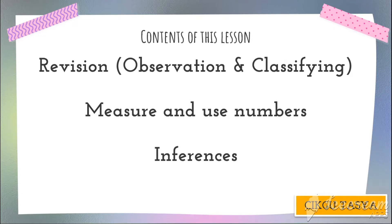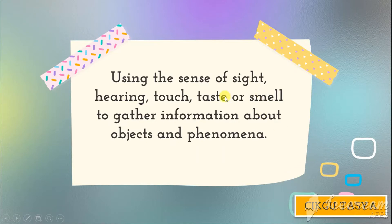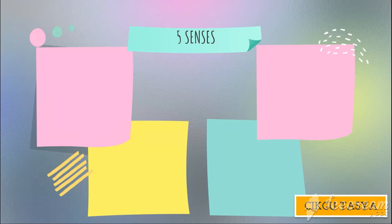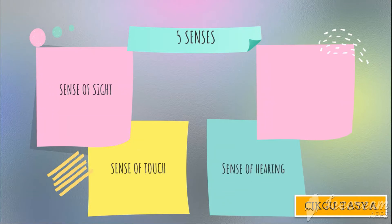Let's start with a revision on observation. The definition of observation is using the senses of sight, hearing, touch, taste, or smell to gather information about objects and phenomena. You use your five senses to observe and gain information about an object or phenomena during an experiment. The five senses are: sense of sight, sense of touch, sense of hearing, sense of taste, and sense of smell.